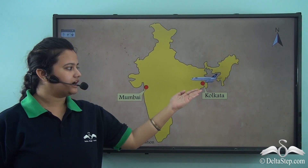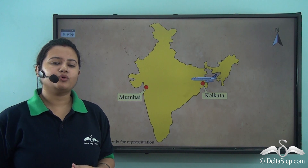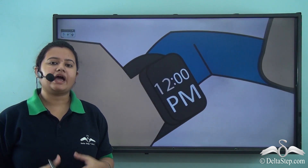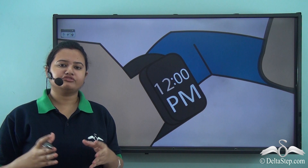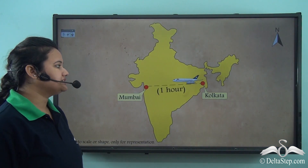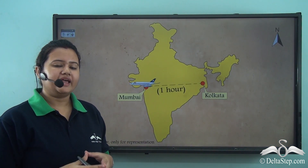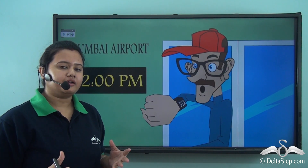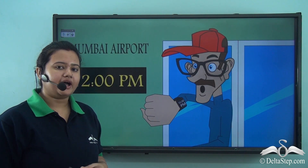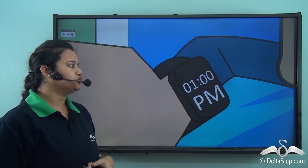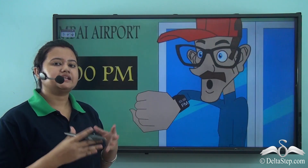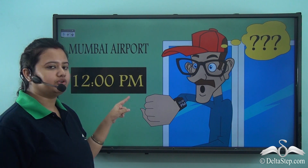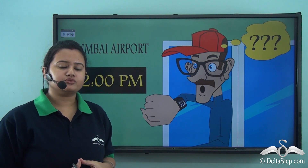Ravi lives in Kolkata and he wants to visit Mumbai. So he went to Kolkata airport and took a flight for Mumbai at 12 noon. The flight took almost an hour. Now when he reached Mumbai, the time by his watch was 1 pm. But at Mumbai airport, it was still 12 noon. So he was confused.